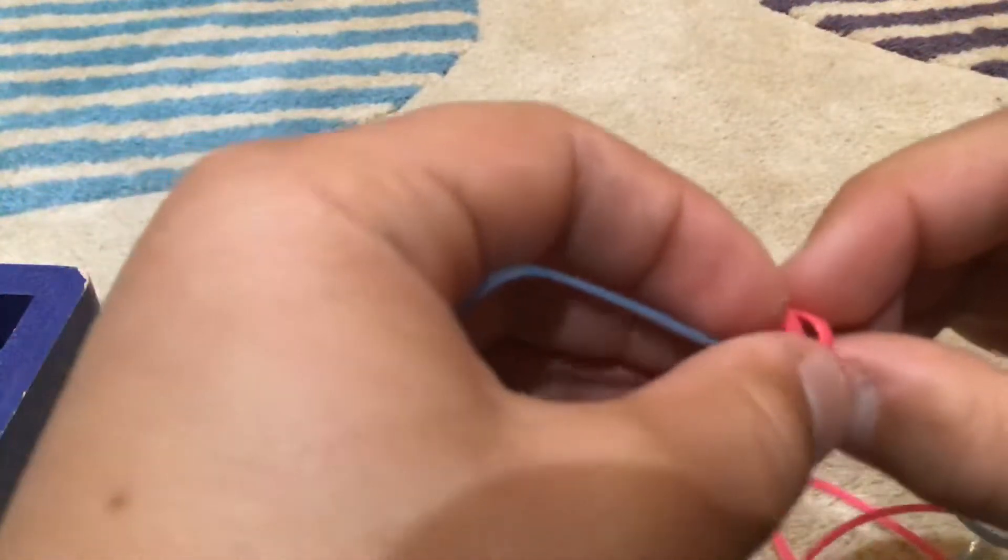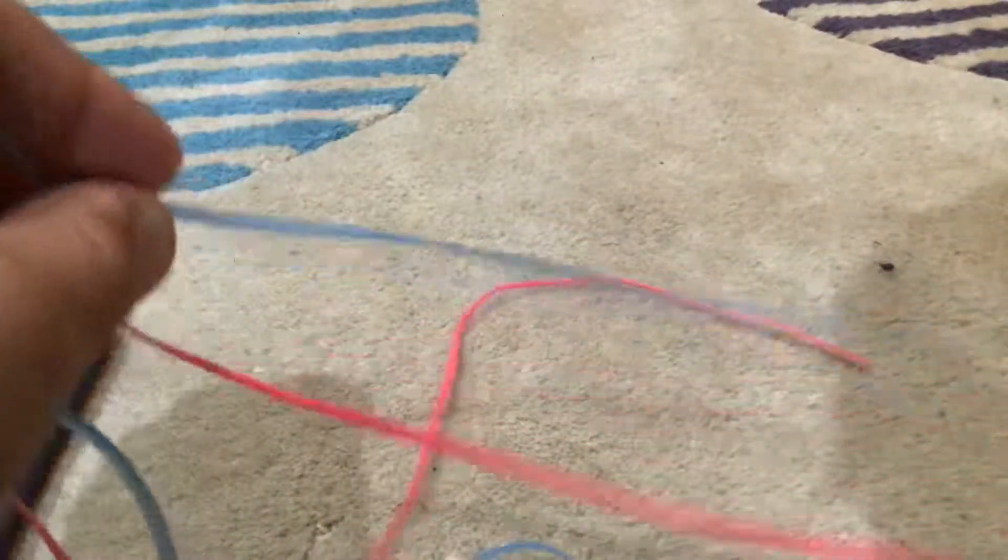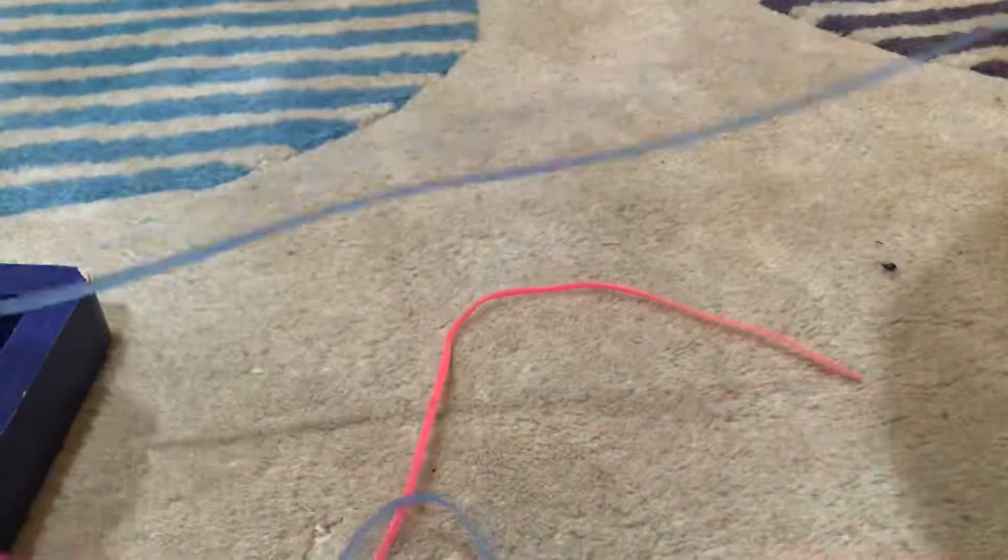It'll look like this. Then take the blue string, pull it all the way to the end and get it. So now you want to do over-under with these.